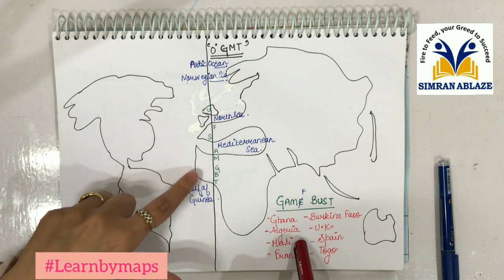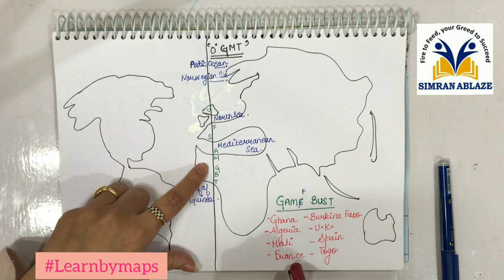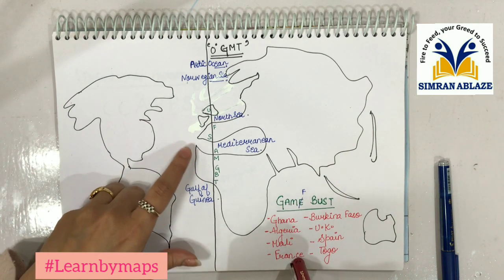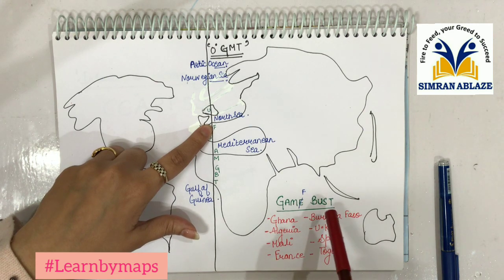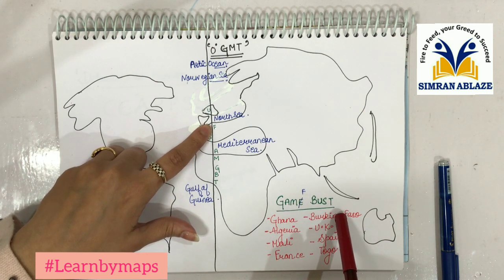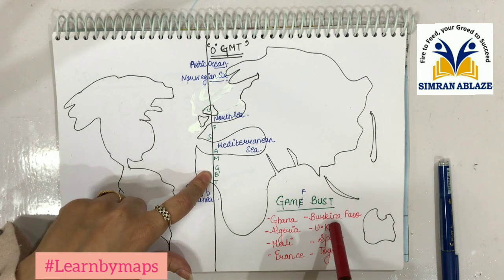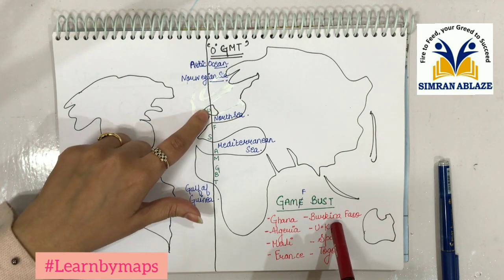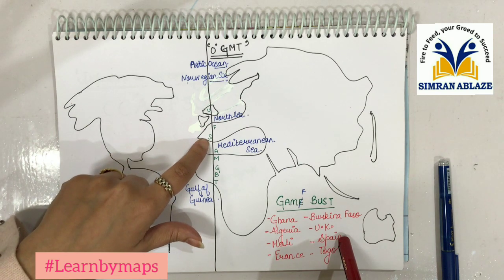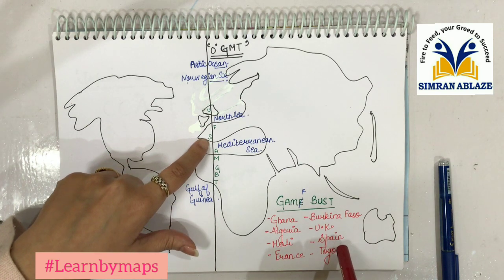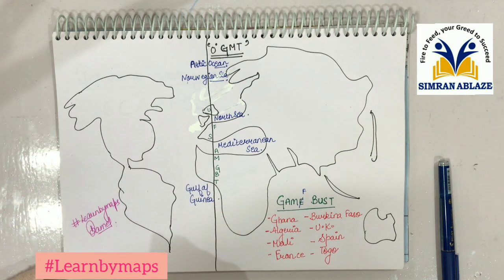I will link a related video in the description box. Then F is for France, which is a European country. Then B is for Burkina Faso, which is an African country. Then U is for UK, then S is for Spain, which is in Europe, and T is for Togo — a very small country in Africa.